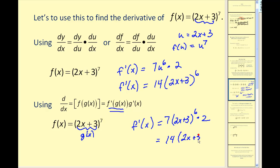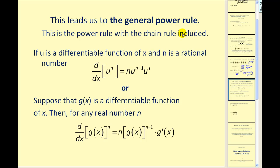I like the first method because it breaks things into smaller steps. The second notation skips from the original function all the way to the derivative, which is fine once you've done quite a few of these. This leads us to the general power rule, which basically includes the chain rule within the power rule. If u is a differentiable function of x and n is a rational number, then the derivative of u to the nth power equals n times u to the n minus one times u prime — where u prime is du/dx from the chain rule.